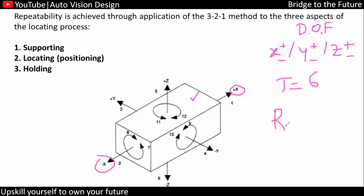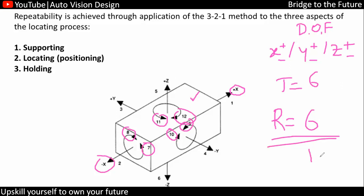Similar to that, we have the rotation — so along the x axis positive clockwise and anti-clockwise, along the y axis clockwise and anti-clockwise, along the z axis clockwise and anti-clockwise. So again we are going to have 6 degrees of freedom in rotation, making a total of 12 degrees of freedom if you consider positive, negative, clockwise, and anti-clockwise.